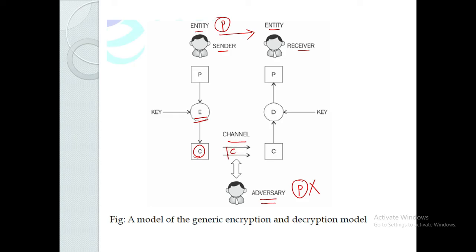At the receiver side, the same message arrives as ciphertext. The receiver applies the decryption algorithm to convert the ciphertext back to the original plaintext P, because the receiver needs to understand the information. This is the concept of encryption and decryption — the two techniques used in cryptography.